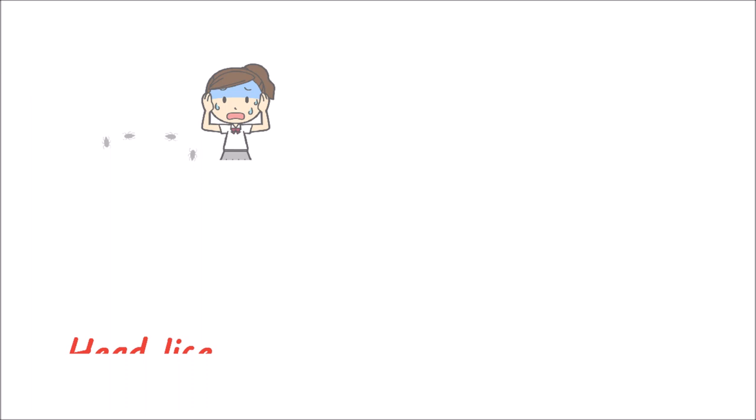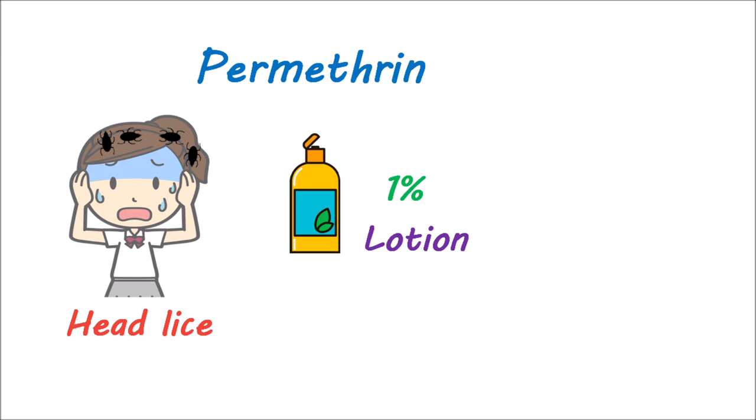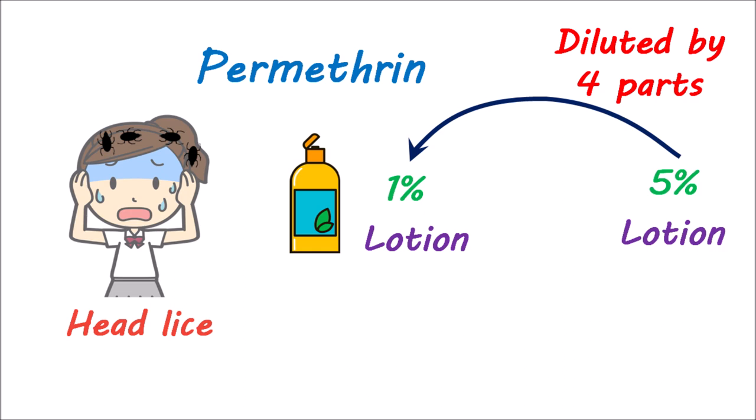To treat head lice, permethrin is available as a lotion at a strength of 1%. Another formulation is also available as a lotion containing permethrin at 5% strength, which can be used for the treatment of both scabies and pediculosis capitis. When used for the treatment of head lice, this lotion should be diluted with 4 parts water to produce a final concentration of 1% that can be applied to the scalp and hair.